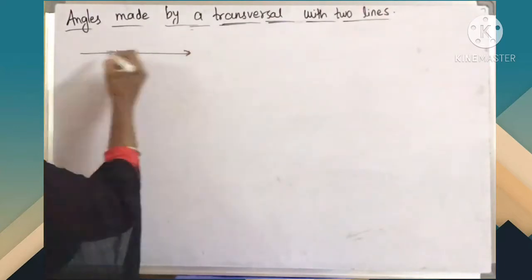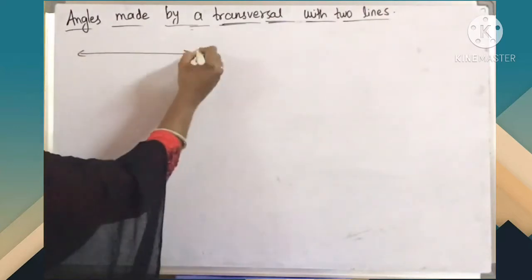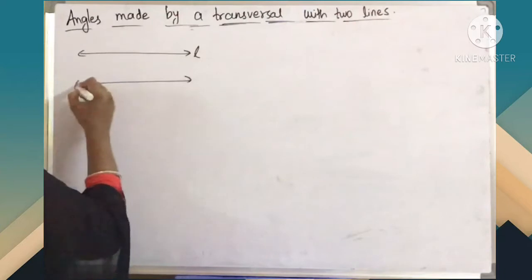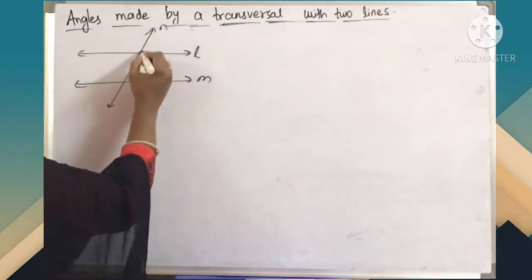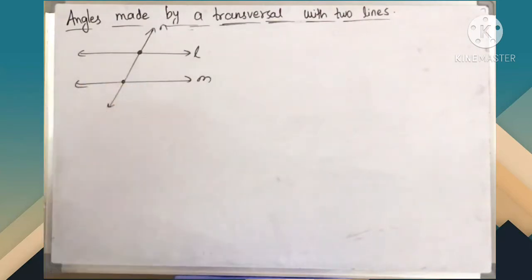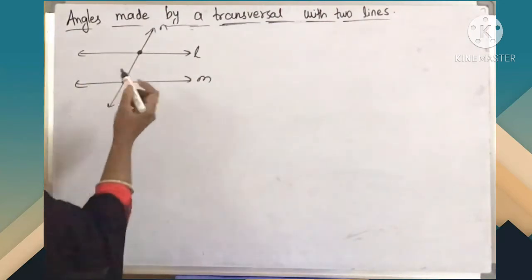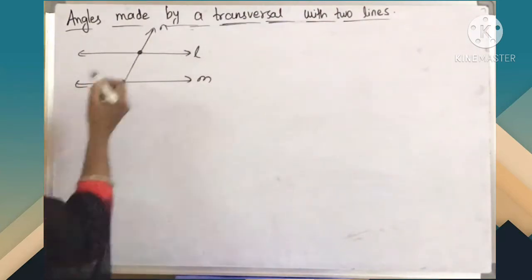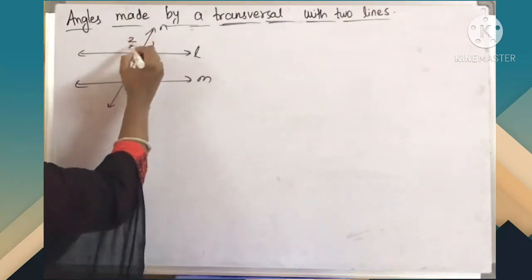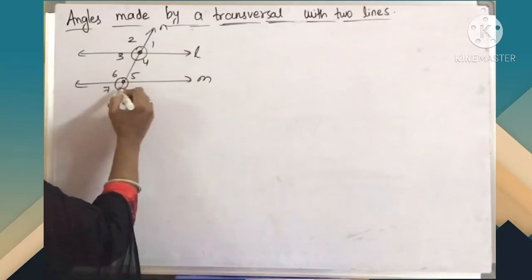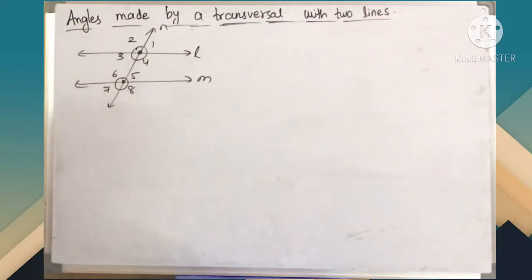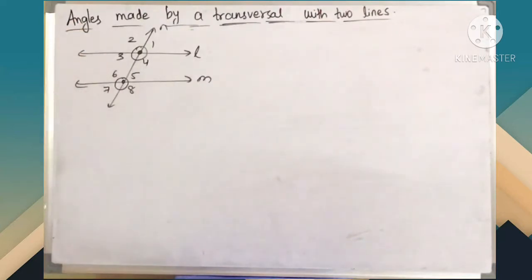Here I am considering two lines L and M, and this is the transversal N, because it is intersecting the other two lines at different points. So when a line intersects the other two lines we will get 8 angles: 1, 2, 3, 4, 5, 6, 7, 8. Using these 8 angles we will consider different pairs of angles.